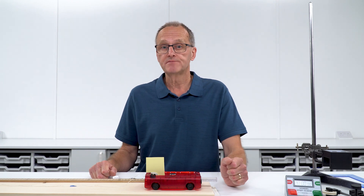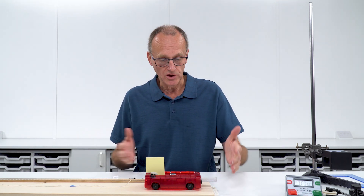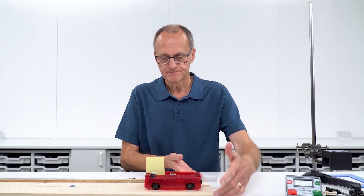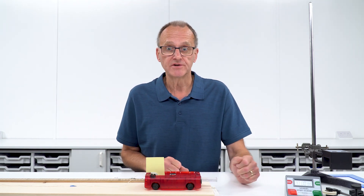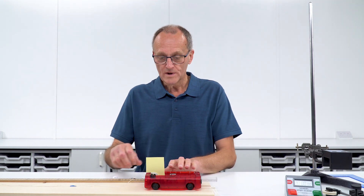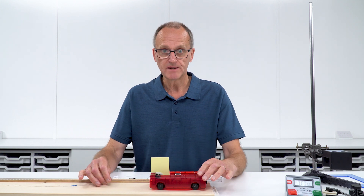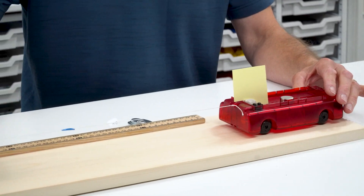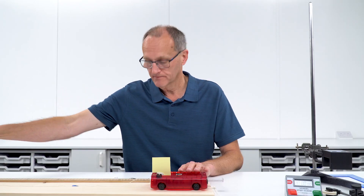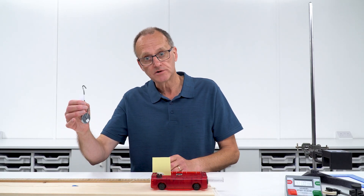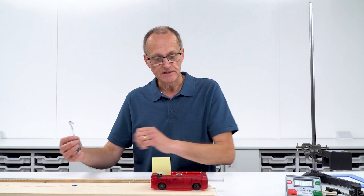Let's have a quick look at the experimental setup. The experiment is best done on a ramp that can be tilted, but it can equally well be done on a standard laboratory bench. We need the trolley to be as free-running as possible to reduce friction. A string attached to the trolley, passing over a pulley at the end with masses hanging on the string, will accelerate the trolley as the masses fall.